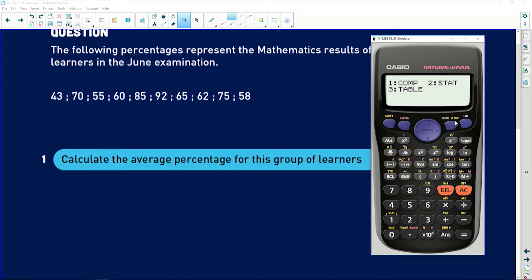So you press mode or setup, 2 for stats, 1 for variance because we only have one kind of variable here, and you enter in each data point followed by an equals.